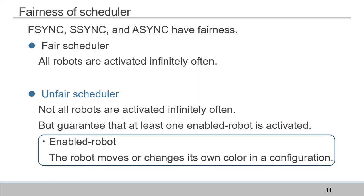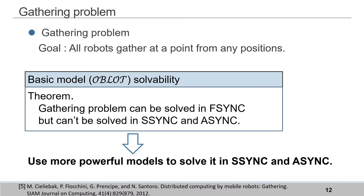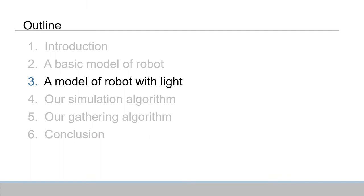I've talked about basic models and related concepts for our research. In this slide, I'd like to talk about the gathering problem. Its goal is that all robots at any position gather at a point where they didn't know beforehand. Previous research showed a theorem: the gathering problem can be solved in Fsync, but cannot be solved in Ssync and Async. So to solve gathering in Ssync and Async, we must use a more powerful model. In the next section, I'll show you a more powerful model having light.